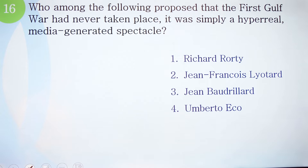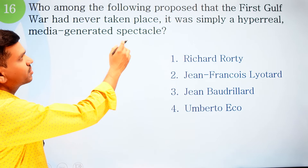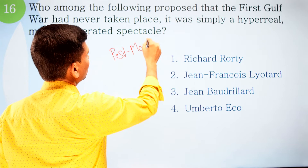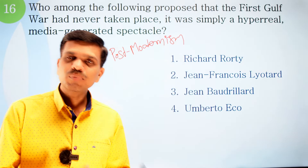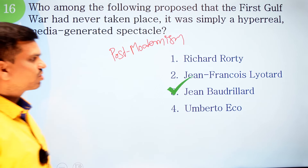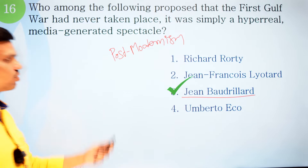Question sixteen: Who among the following proposed that the first Gulf War had never taken place — it was simply a hyperreal, media-generated spectacle? Options: one, Richard Rorty; two, Jean-François Lyotard; three, Jean Baudrillard; four, Umberto Eco. This is in postmodernism. The correct option is number three, Jean Baudrillard, who described the Gulf War as hyperreality — an extension of postmodernism.